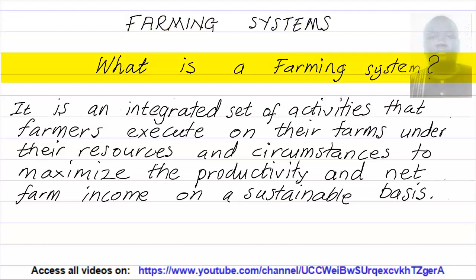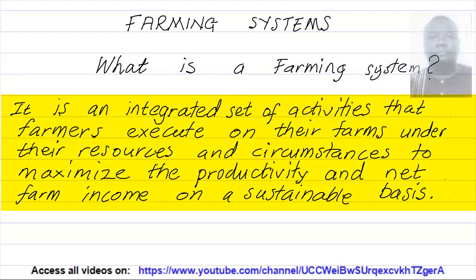What is a farming system? There are a lot of definitions for a farming system, but I will use one that many scholars use. It is an integrated set of activities that farmers execute on their farms under their resources and circumstances to maximize the productivity and net farm income on a sustainable basis.